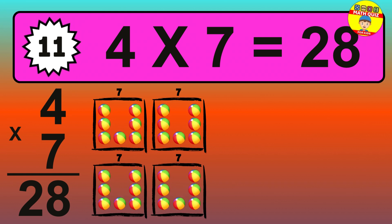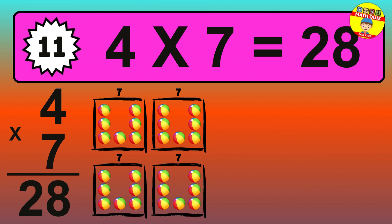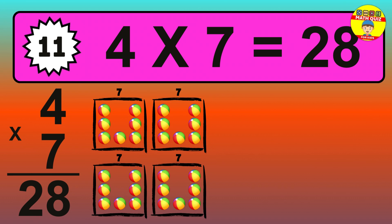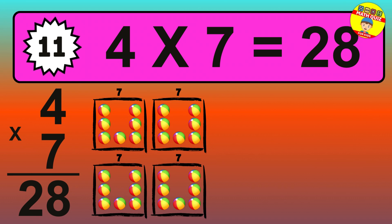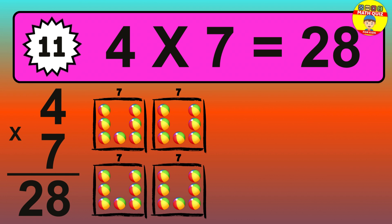Question 11. 4 times 7 equals what? The answer is 4 times 7 is 28. To calculate, we have 4 groups with 7 balls each one. So, how many balls do we have? 28 balls.